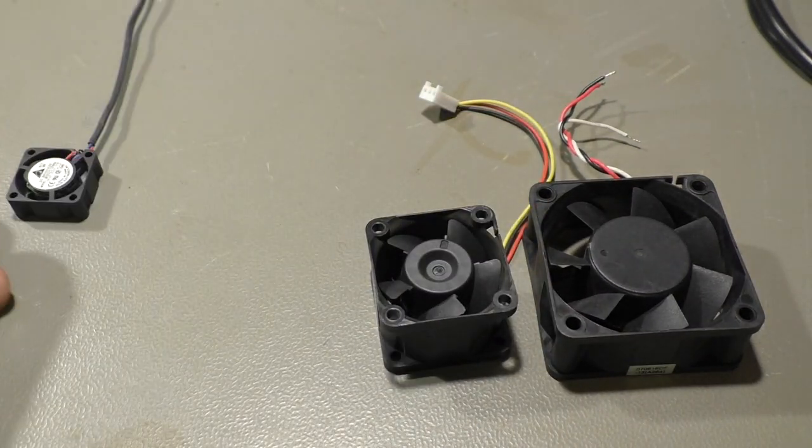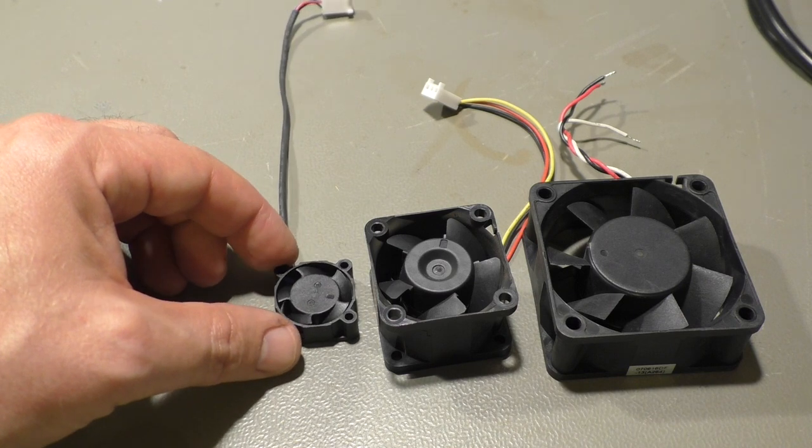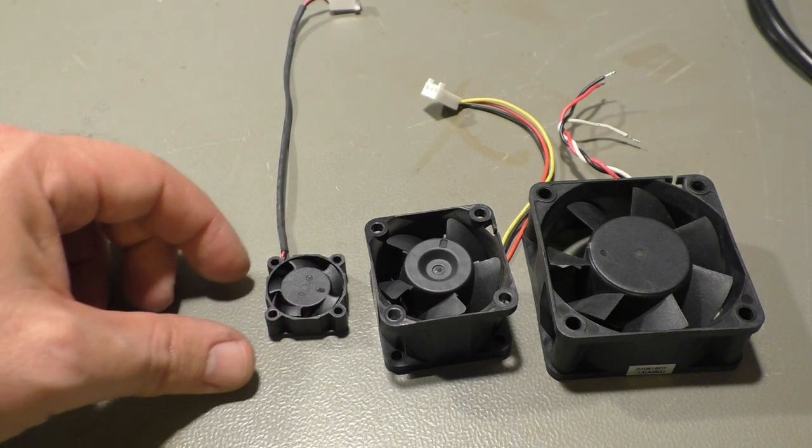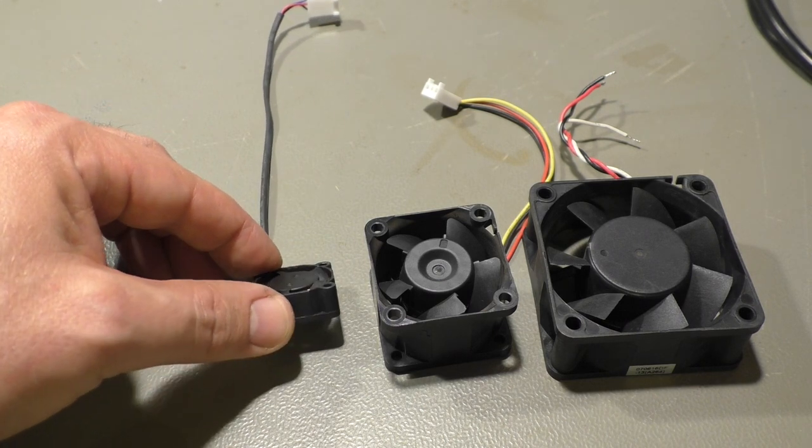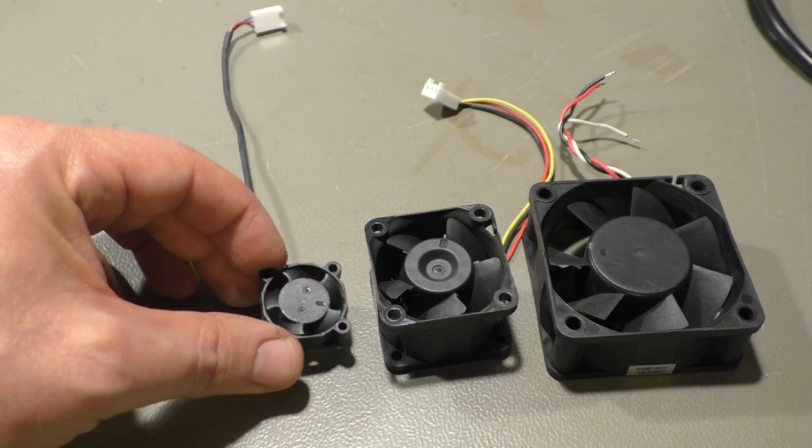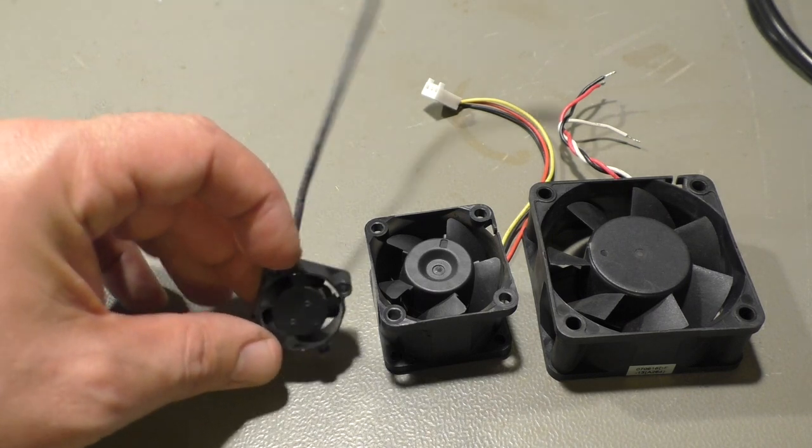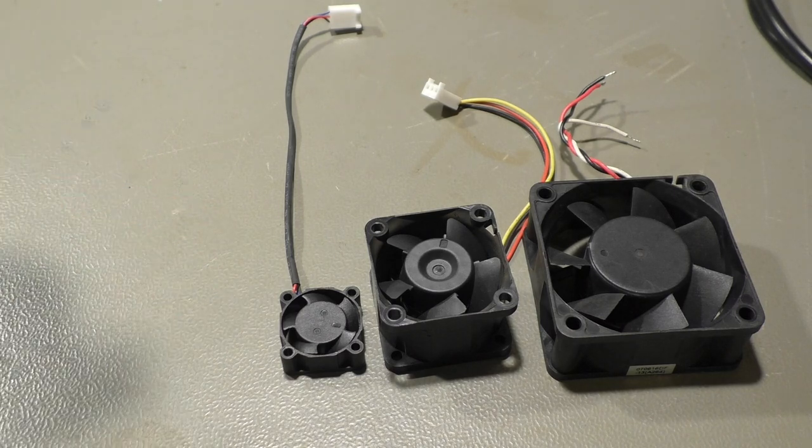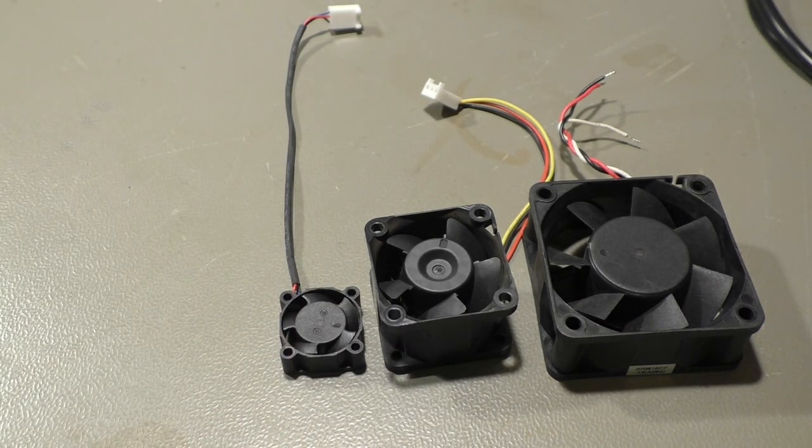There are even smaller fans like this one that comes from a small Sun Spark server. It's one of the CPU fans - it has two of them per CPU - and they blow the air radially through the heatsink. It's very tiny for a server fan.